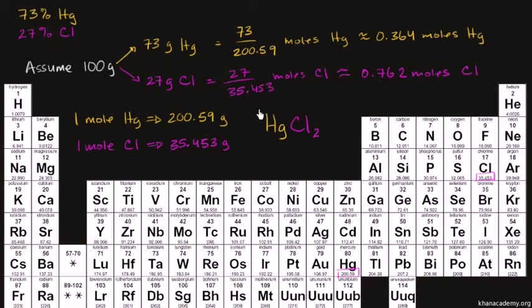So based on these measurements right over here, it's very likely that you have mercury two chloride. And the reason why it's called mercury two chloride is because chlorine is highly electronegative. It's an oxidizing agent. It likes to take other people's electrons, or hog other people's electrons. In this case, each of the chlorine likes to hog one electron. So in this case, two chlorines are going to hog two electrons from the mercury.